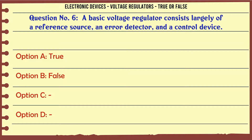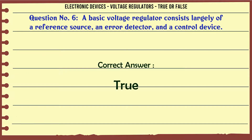A basic voltage regulator consists largely of a reference source, an error detector, and a control device. A. True. B. False. The correct answer is: True.